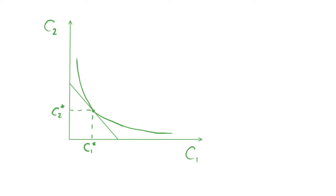In this video we're going to look at what happens if we have some exogenous income shock to our income in our two-period intertemporal choice model. We have our budget constraint and some indifference curve, which gives the consumer's preferences over consumption in periods one and two. Our axes are given by C1, consumption in period one, and C2, which is consumption in period two.